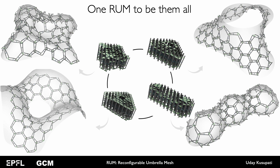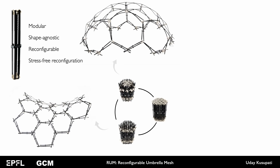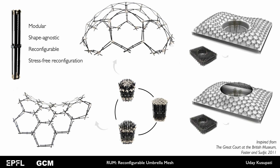Thus RUMs offer vast reconfigurability over both continuous geometry and the discrete topology of the surface. One RUM can be deployed into a large number of shapes. This portrays potential for designing circular architecture. We introduce the geometric principles of RUM reconfigurable deployable structure. We show fabricated prototypes to validate the principle. Practicality aside, here is a mere speculation of how RUM can be used in a large scale architectural scenario.